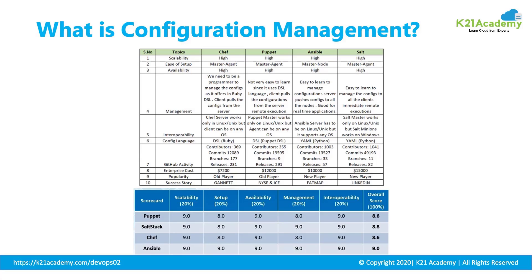Now let us learn about Chef, Puppet, Ansible and SaltStack. What are these four? These are all configuration management tools, or you can call them infrastructure as code tools. What is the main difference between Chef, Puppet, Ansible and SaltStack? Here is a table that actually tells you the main differences.